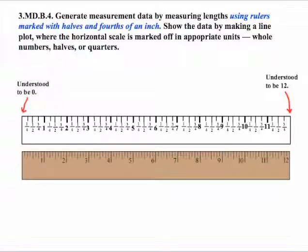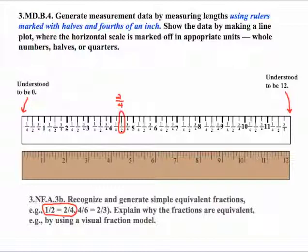At the ends, they have to understand that at the beginning we have zero, and at the end, in this case, it's twelve. It would be a good idea to also address another standard here, 3.NF.A.3.B, dealing with recognizing and generating simple equivalent fractions. In this case, one-half equals two-fourths. Instead of marking this off in halves, some of you might mark it off as two-fourths and then talk about this being equivalent to one-half.